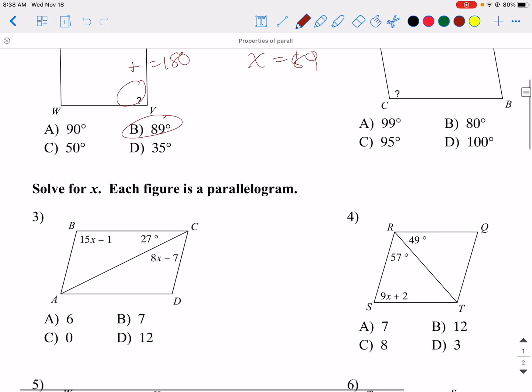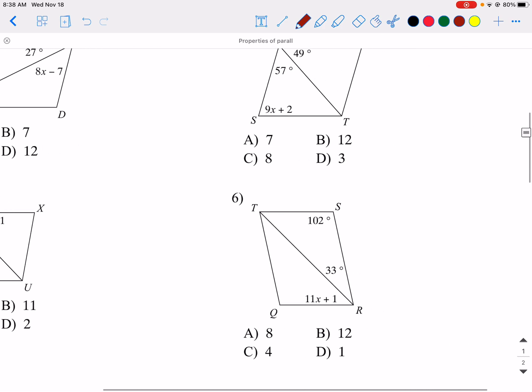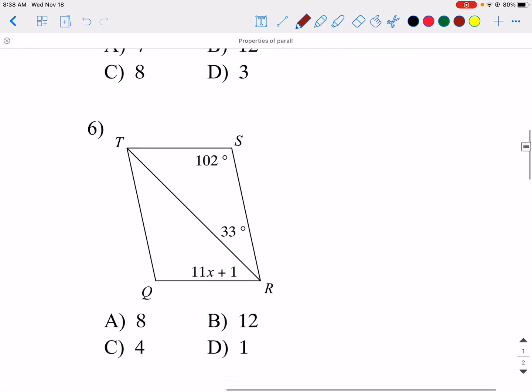So when we get down to something like 6, it's very similar to the one in your quiz. So I take 102 plus 33, and this angle right here, plus 11x. So 102 plus 33 plus 11x plus 1, and they all have to equal 180.